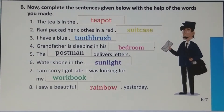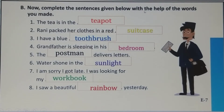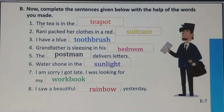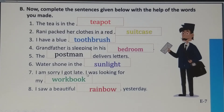Complete the sentences given below with the help of the compound words you made. The tea is in the teapot. Rani packed her clothes in a red suitcase. I have a blue toothbrush. Grandfather is sleeping in his bedroom. The postman delivers letters. Waterstone in the sunlight. I was looking for my workbook. I saw a beautiful rainbow yesterday. In this way, you have to write the compound words in the blanks.